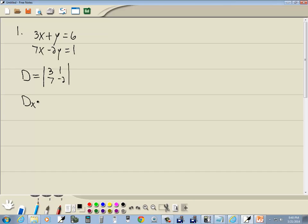And then we say D sub x. What you do is you take this and you replace where the x's were with the numbers on the right side. So we've got 6, 1, 1, negative 2.